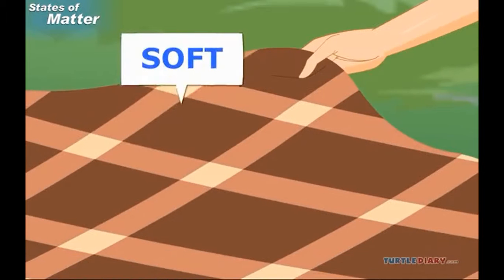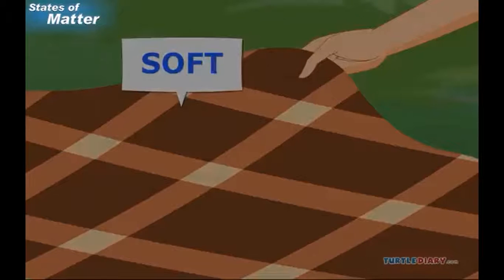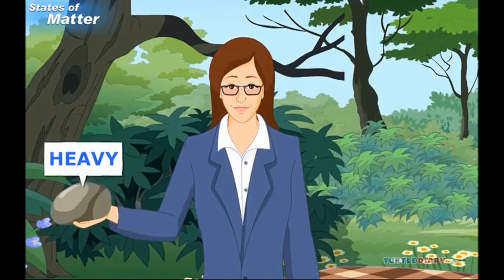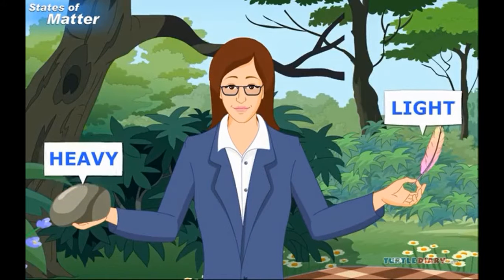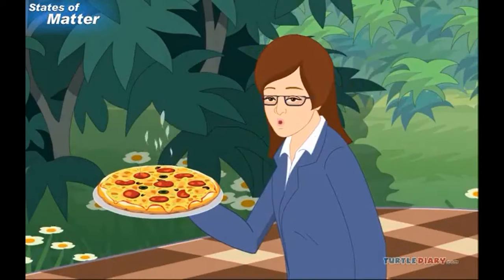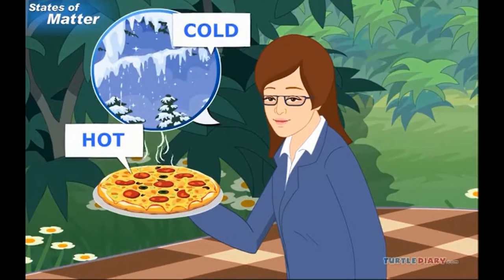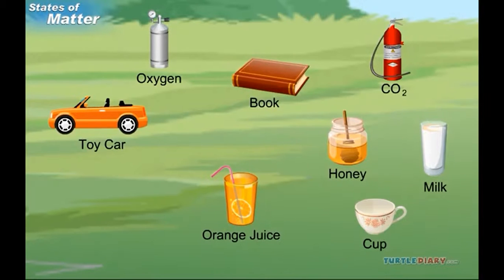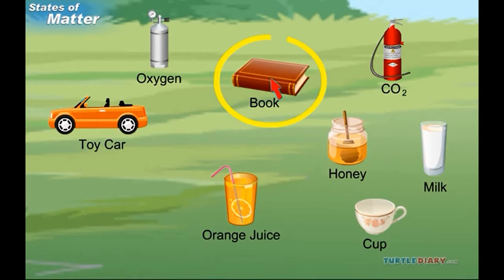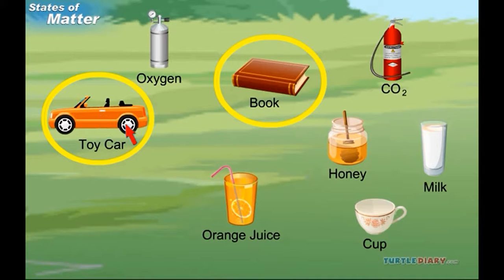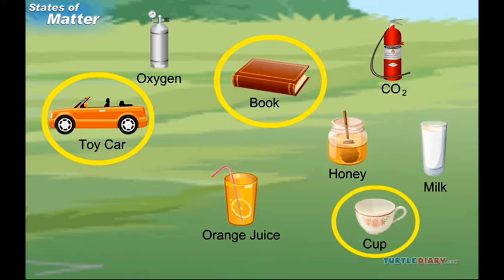Solids can be hard like a block or soft like a blanket. They can be heavy like a boulder or light like a feather. They can be hot like a pizza or cold like an icicle. Can you figure out which of these are solids? A book, a toy car, and a cup — all are solids.